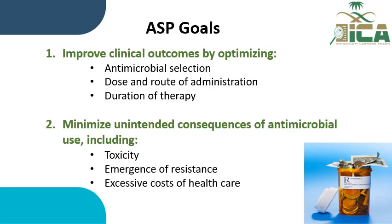There are two main goals for the ASP. First, improve the clinical outcomes by optimizing the antibiotic selection, dose and route of administration, and the duration of therapy. The second goal is to minimize unintended consequences of antibiotic use, including toxicity, emergence of resistance, and excessive cost.